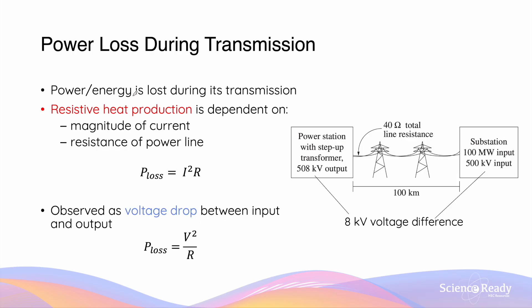The main problem associated with power transmission is a loss of energy due to resistive heat production in the power lines. Power loss due to resistive heat production is dependent on the magnitude of current and the resistance of the power line itself. Specifically, power loss can be calculated using this equation: power loss equals I squared times R, where R is the resistance of the power line in ohms.